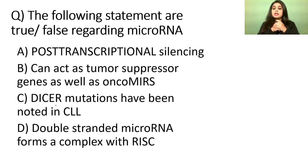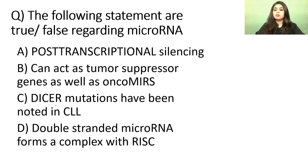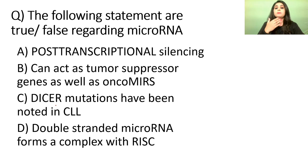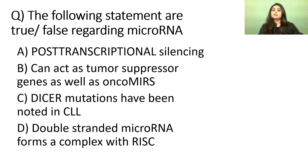Welcome to students joining now — this is an AIMS pattern question session. We've just finished the first question on CGH. The second question: you have to mark the following statements regarding microRNA as true or false. Number one — it causes post-transcriptional silencing. Number two — it can act as a tumor suppressor gene as well as an oncomir. Number three — Dicer mutations have been noted in CLL. Number four — double-stranded microRNA forms a complex with RISC.